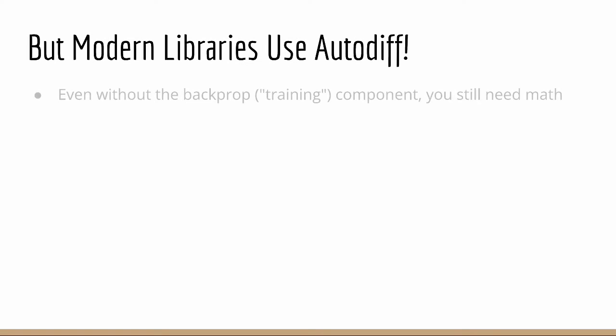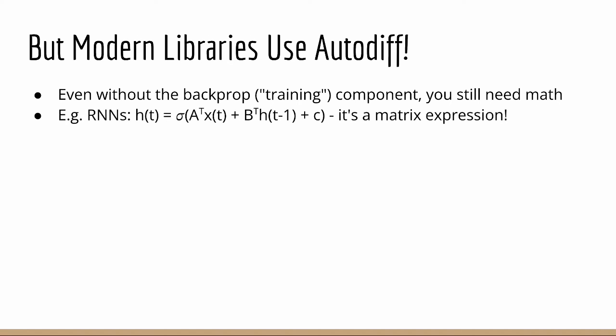But even without backpropagation, there are still instances where you simply need to know math in order to understand neural networks. One example is with recurrent neural networks. In my experience, many students who are inexperienced with vectors and matrices don't understand the concept of number of hidden units, and they cannot visualize how they work easily. The equations simply don't make sense to them.